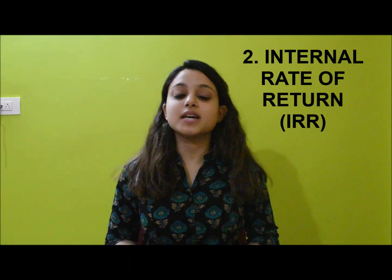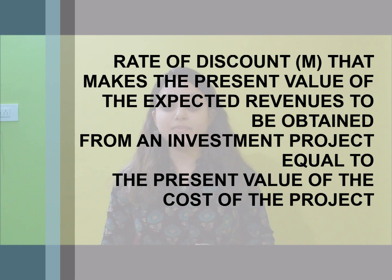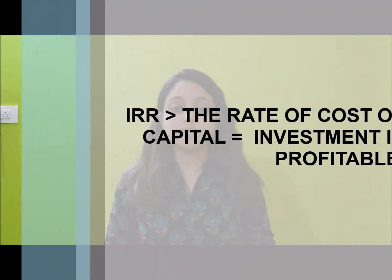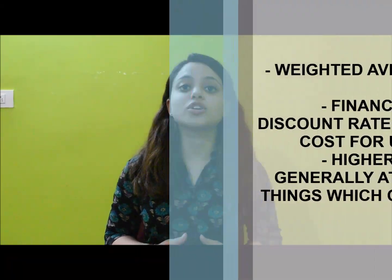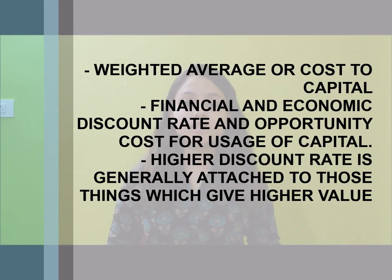The second is the IRR, or internal rate of return — the rate of discount that makes the present value of expected revenue from an investment project equal to the present value of the cost of the project. If the IRR is greater than the rate of the cost of capital, then the investment project would be favored. The discount rate is the weighted average cost of capital — it is the financial or economic discount rate and the opportunity cost for usage of capital. Higher discount rates are generally attached to higher-value risks; for instance, in the dam example, nearby villages needing to be cleared due to flooding risk would attract a higher discount rate.